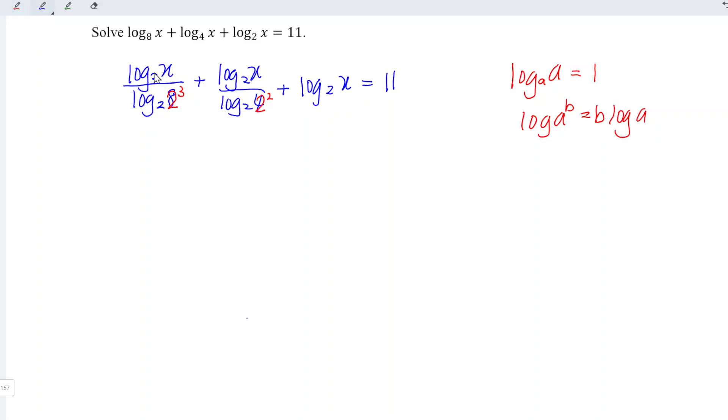For the first term, we can rewrite as log x to the base 2 divided by 3, and log 2 to base 2, which is 1. So anything times 1, we get back the same thing.